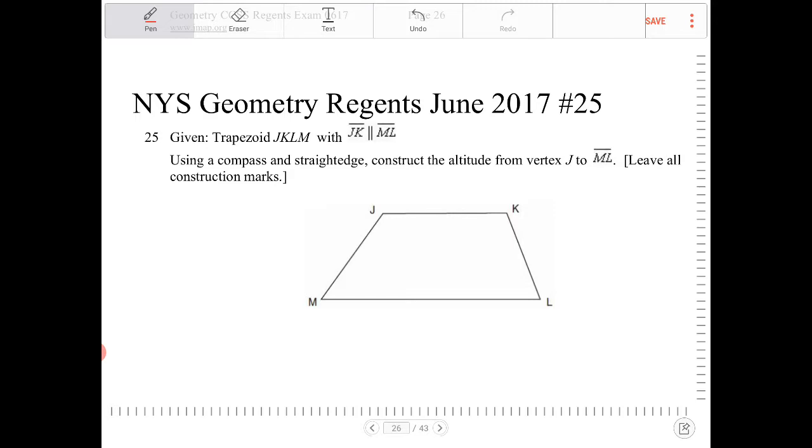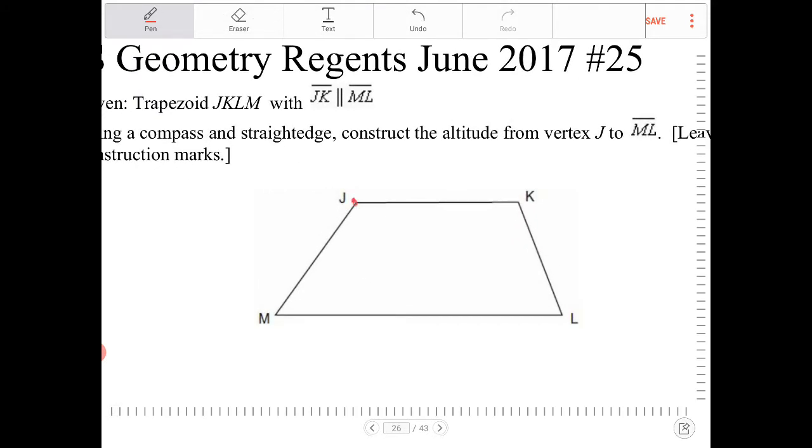So what the question is really asking for us to do is to draw a line that's perpendicular to ML while passing through point J. The fact that JK is parallel to ML is really not that important to this problem.